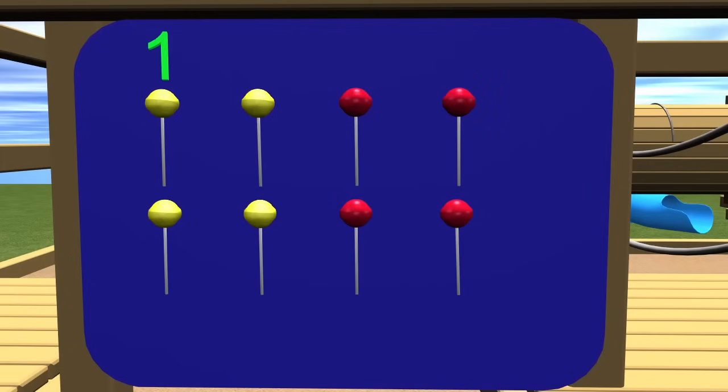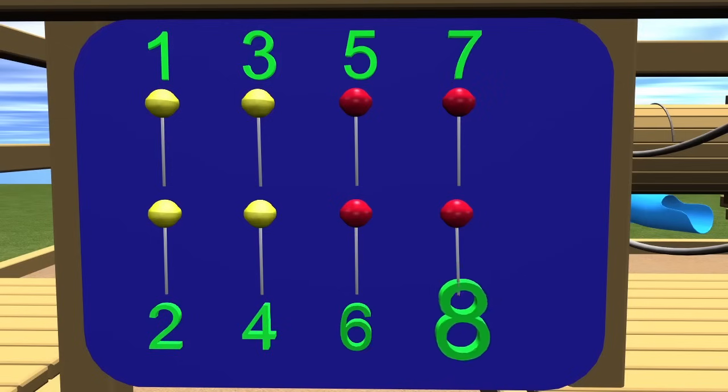So we have one, two, three, four, five, six, seven, eight. So eight is going to be an even number.